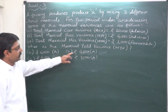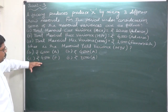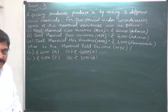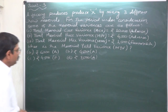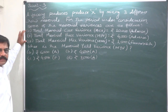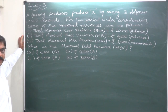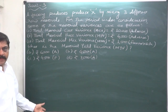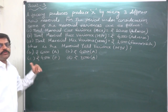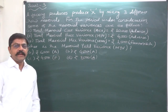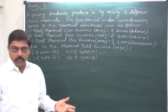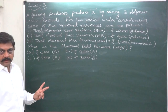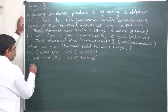The question is: what is the material yield variance (MYV)? The options are: A) rupees 6,000 adverse, B) rupees 4,500 adverse, C) rupees 4,500 favorable, and D) rupees 7,500 adverse. Can we directly find the material yield variance from these three given values? No. The answer is found in two steps: first, we find the material usage variance, and then we find the material yield variance.